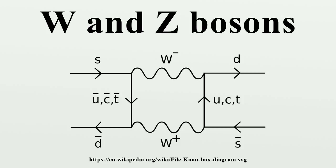Weak nuclear force. The W and Z bosons are carrier particles that mediate the weak nuclear force, much as the photon is the carrier particle for the electromagnetic force. W bosons. The W bosons are best known for their role in nuclear decay.